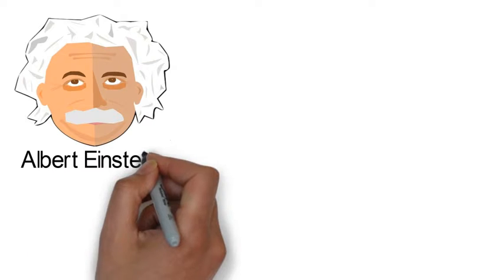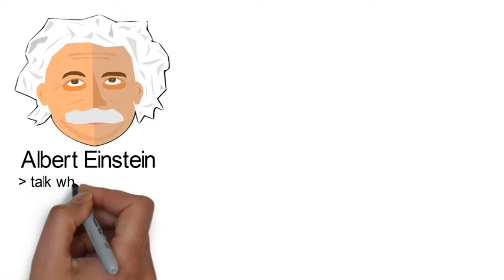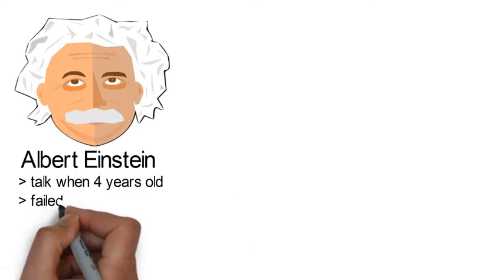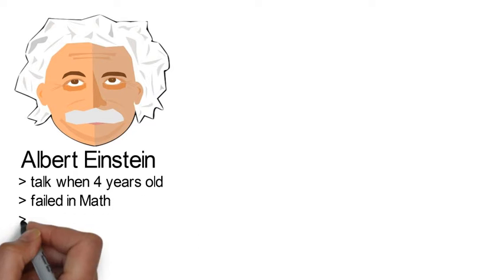This is Albert Einstein. He learned to talk when he was four years old. He failed in math as a student.